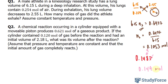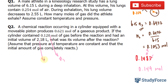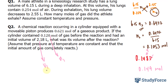So we have 0.149 moles of air were exhaled. Now we can move on to question two, which reads: a chemical reaction occurring in a cylinder equipped with a movable piston produces 0.621 moles of gaseous product. If the cylinder contains 0.120 moles of gas before the reaction — this is N₁ — and had an initial volume V₁ of 2.18 liters, what was its volume after the reaction? We assume pressure and temperature are constant and that the initial amount of gas completely reacted.